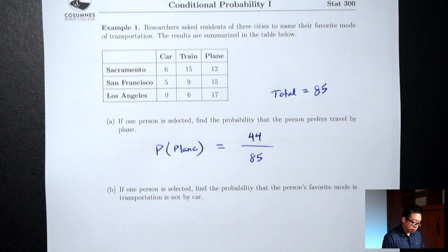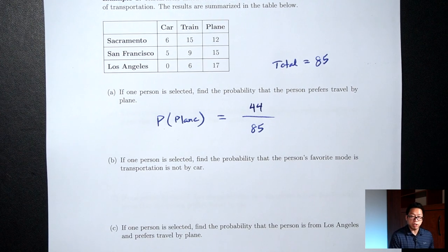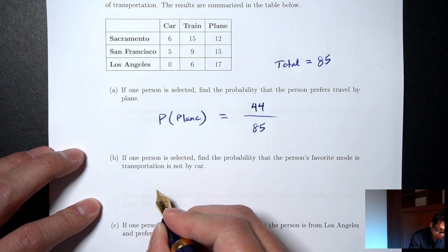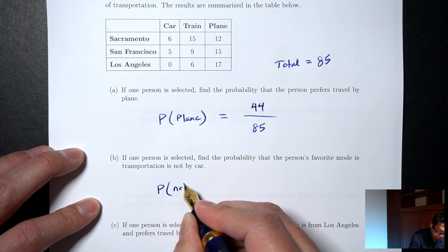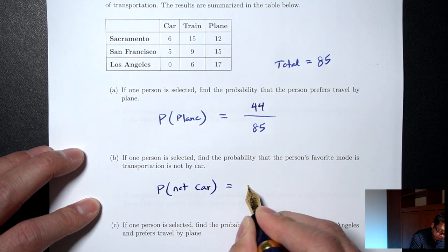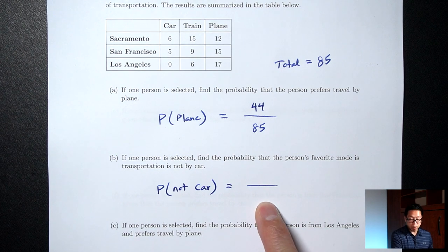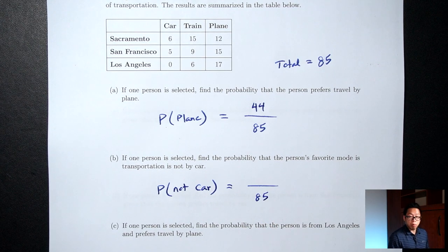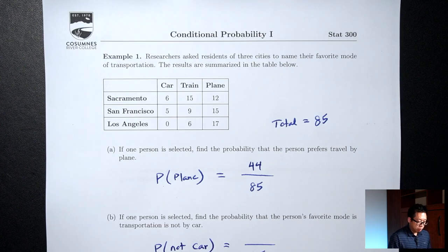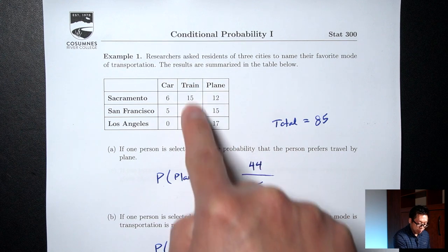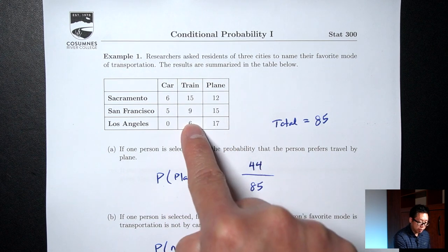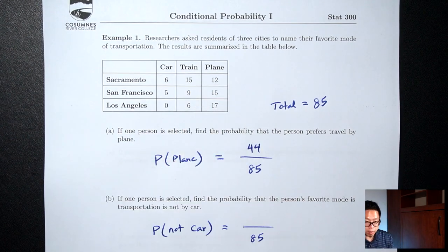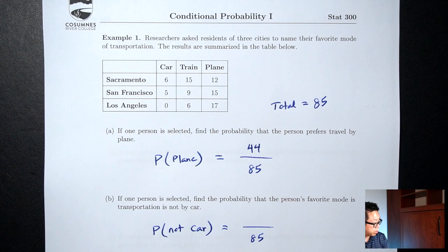Part B: if one person is selected, find the probability that the person's favorite mode of transportation is not by car. In symbols, I'm looking for probability of not car. The bottom is 85 — the total. For the top, not car would be all the train people together with all the plane people: 15 plus 9 plus 6 for train, plus 12 plus 15 plus 17 for plane — together that is 74.